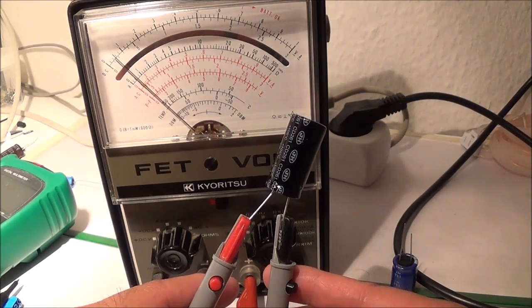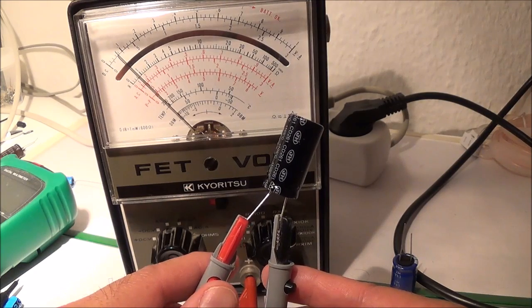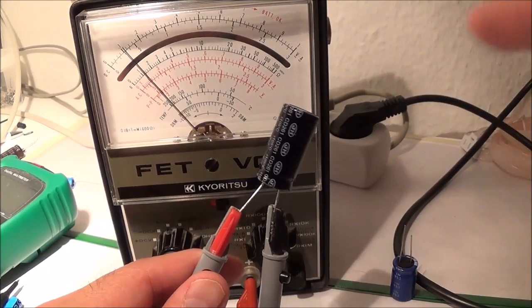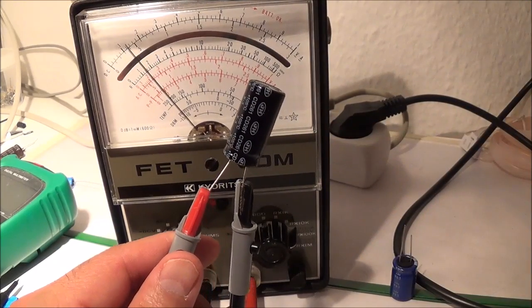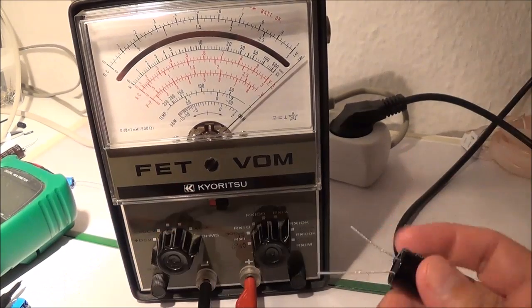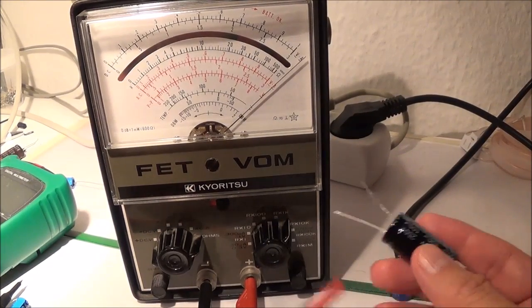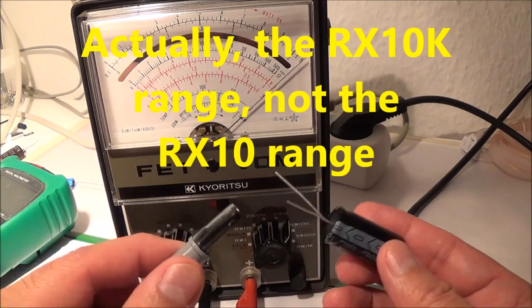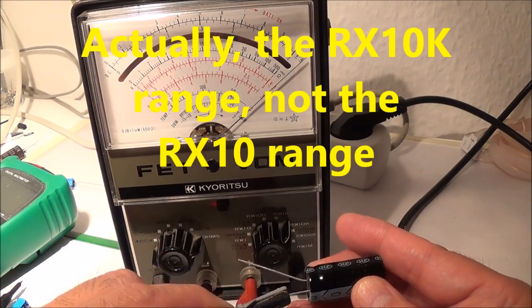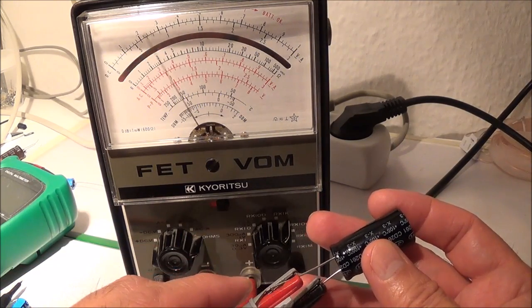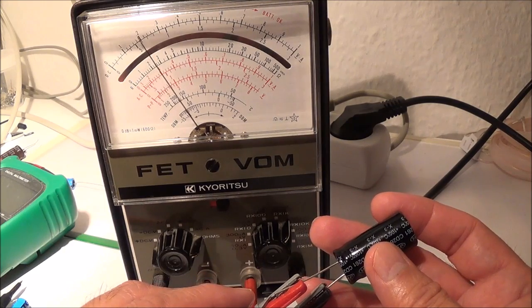I think what I'll do now is I'll go even a little bit lower with the range, discharge again, and then go lower. Now I'm on the R times 10 ohm meter range. Okay again I have to observe the polarity and then connect, there it goes.